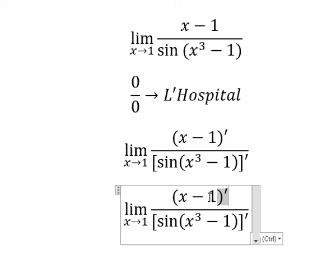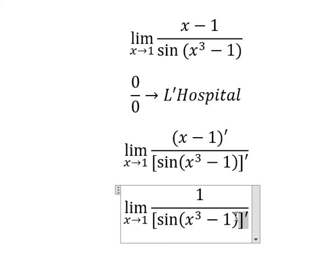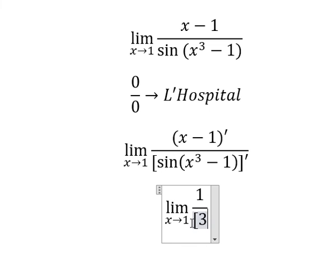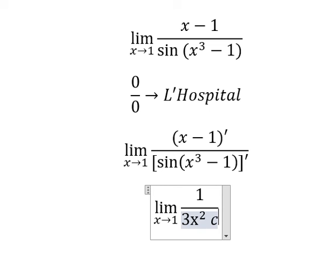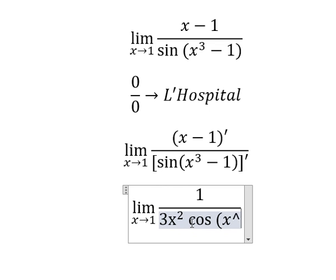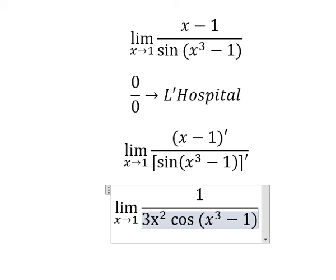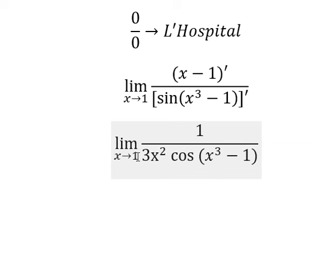First derivative of the denominator is 3x² cos(x³ - 1). Now I will put 1 here and here.